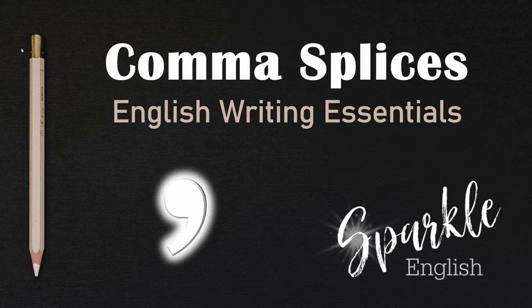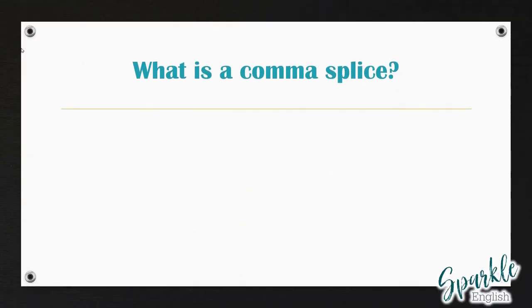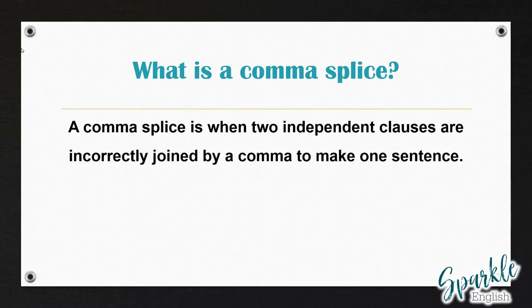In this series I teach you to improve your writing skills by teaching you about how to correctly use punctuation and about common punctuation errors. In today's video I'm going to teach you about comma splices. So what is a comma splice? A comma splice is when two independent clauses are incorrectly joined by a comma to make one sentence. So a comma splice is an error — it is not a good thing.